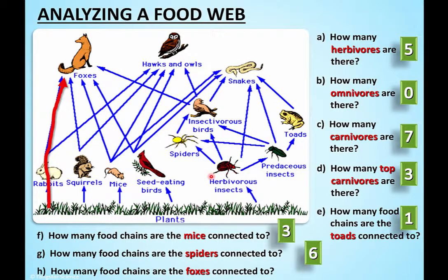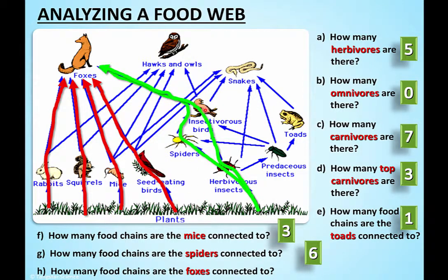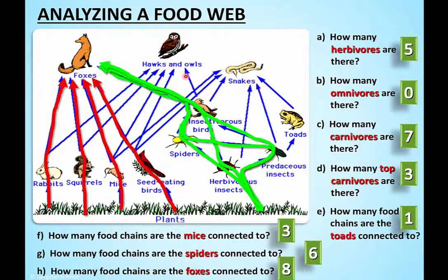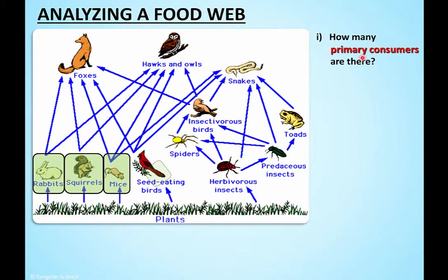The fox is connected in many, many ways: one way through the squirrel, through the mouse, through the bird, through the herbivorous insect, through the predaceous insect and the spider and the bird - you can count them, there are eight pathways. Now, primary consumers are the herbivores - I'm just showing you that the words mean the same thing.